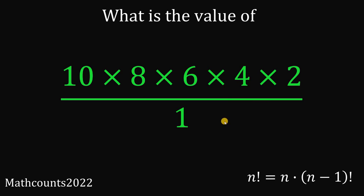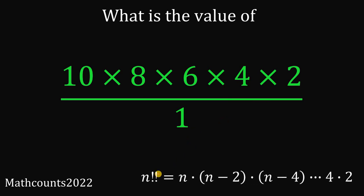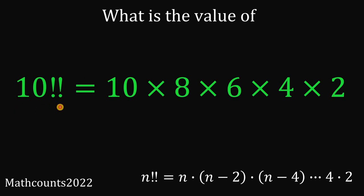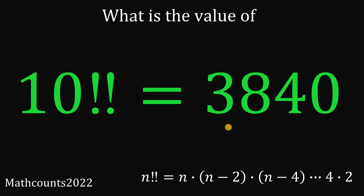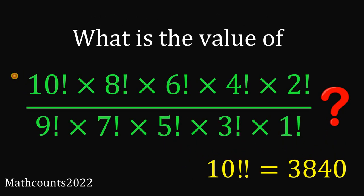This result is very familiar because it uses the concept of double factorial. Take note: n double factorial equals n multiplied by (n minus 2) multiplied by (n minus 4), all the way down to 4 times 2. So 10 times 8 times 6 times 4 times 2 can be simplified to just 10 double factorial, which equals 3,840. So the value of this expression is 3,840, or simply 10 double factorial.